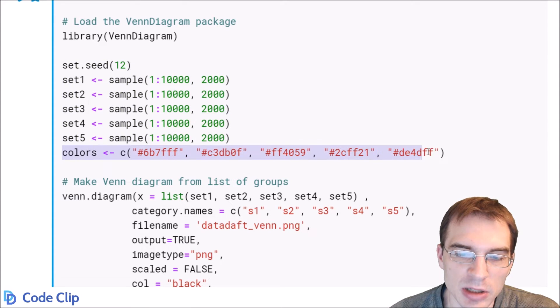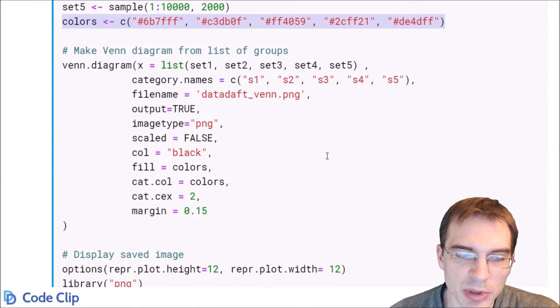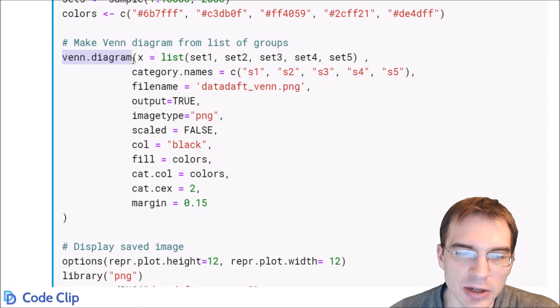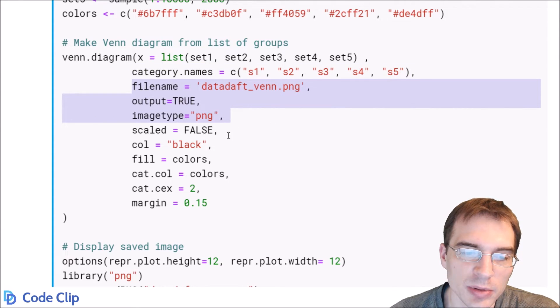We're going to set some custom colors for them, and then to make the plot, you just call venn.diagram. For the x argument for the data, you pass a list of the different vectors you're using for each of the groups. We're going to give them some names. You have to specify an output file, an image type, and some other options here to control things like the size and colors.